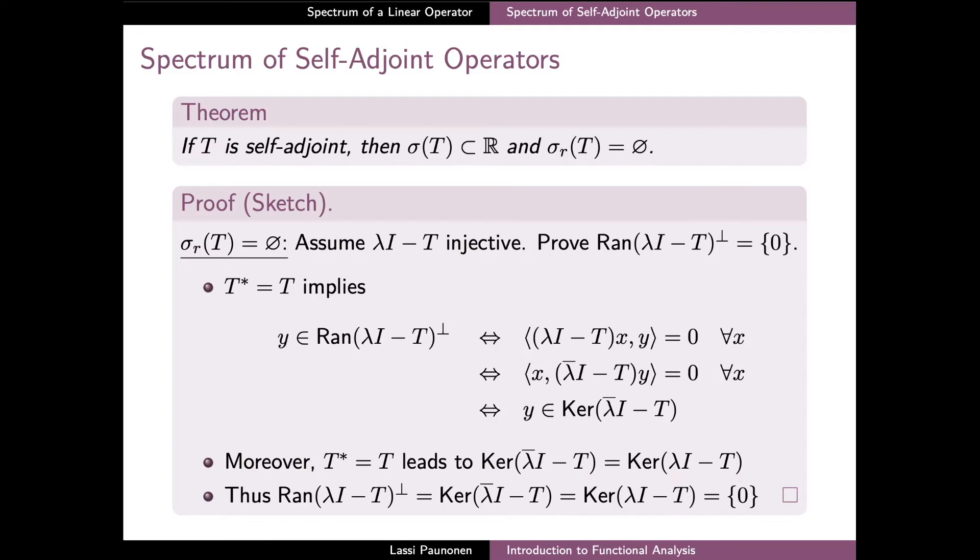Combining these properties, the orthogonal complement of the range of λI − T is equal to the kernel of λI − T, and in particular it is the trivial subspace since λI − T was assumed to be injective, and therefore the proof is complete.